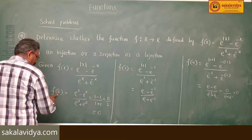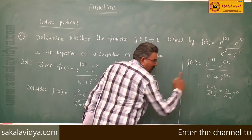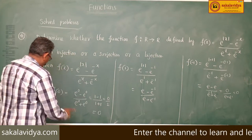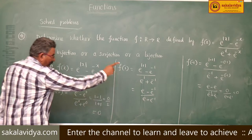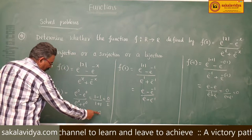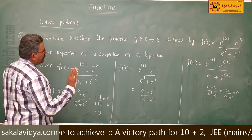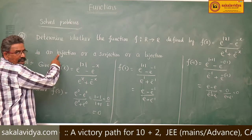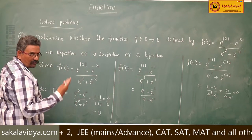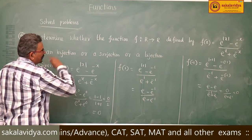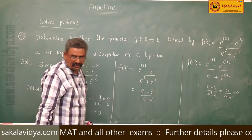So we observe that f(0) = 0 and f(-1) = 0. That means both elements 0 and -1 have the same image 0, which is why it is not an injection — it is not a one-to-one function. Since it is not one-to-one, it cannot be a surjection, and obviously it is not a bijection.